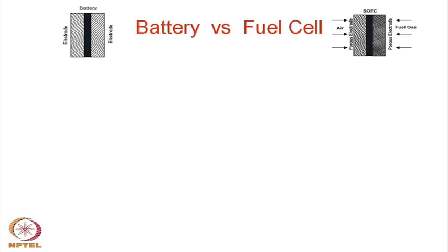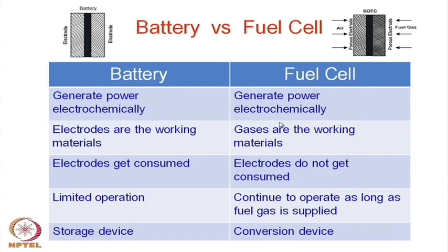Another kind of power source is the battery. A battery is also a source of electrical power in a small way, and a fuel cell generates power in a very analogous way. Let us look at the differences between a battery and a fuel cell, as both are essentially electrochemical devices.